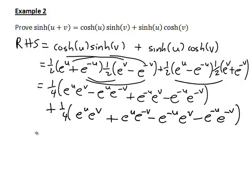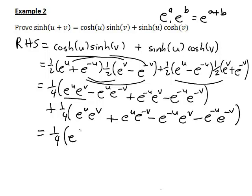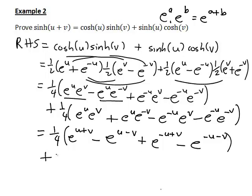Expanding further, each term is multiplied by a quarter, and using the index law that e to the a times e to the b equals e to the a plus b. The first line becomes: a quarter times e to the u plus v, minus e to the u minus v, plus e to the negative u plus v, minus e to the negative u minus v. The second line becomes: plus a quarter times e to the u plus v, plus e to the u minus v, minus e to the negative u plus v, minus e to the negative u minus v.